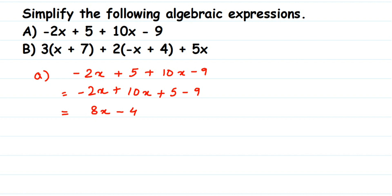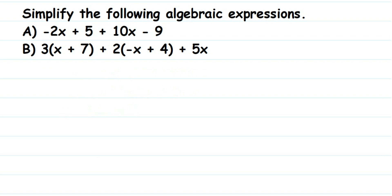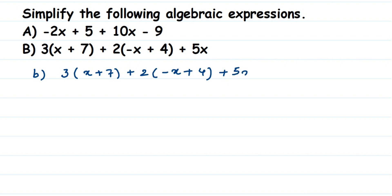The second question has a bracket, so we need to open the bracket. Let me write down the question: 3 times (x plus 7), plus 2 times (minus x plus 4), plus 5x. Whenever you have a bracket, open it, and if there is a number outside the bracket, you have to multiply.